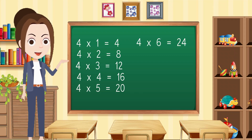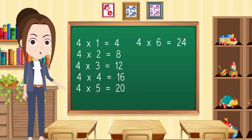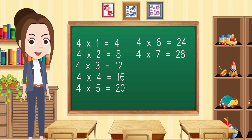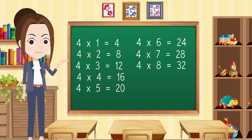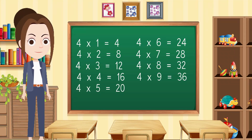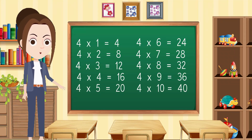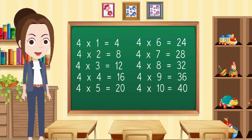4 6s are 24, 4 7s are 28, 4 8s are 32, 4 9s are 36, 4 10s are 40.